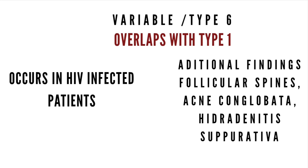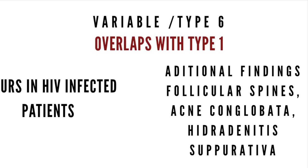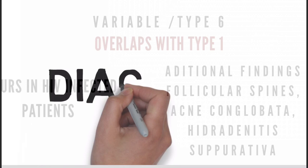Type 6 also has a variable course and is the least common of all types of Pityriasis Rubra Pilaris. If you see these features, it would be wise to run a test for HIV, considering that this form of PRP responds to antiretroviral treatment for HIV.